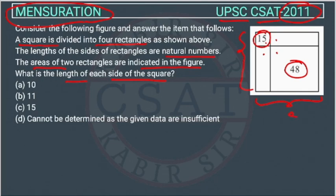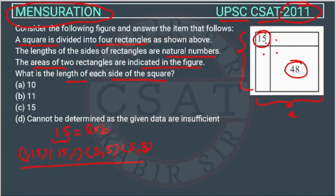We have to find the length of each side of the square. The area 15 is the area of one rectangle, and rectangle area = L × B. We don't know L and B separately, but through factors we can find them. The factors of 15 are: 1×15, 15×1, 3×5, or 5×3. So the possible values of L and B are 1 & 15, 15 & 1, 3 & 5, or 5 & 3.